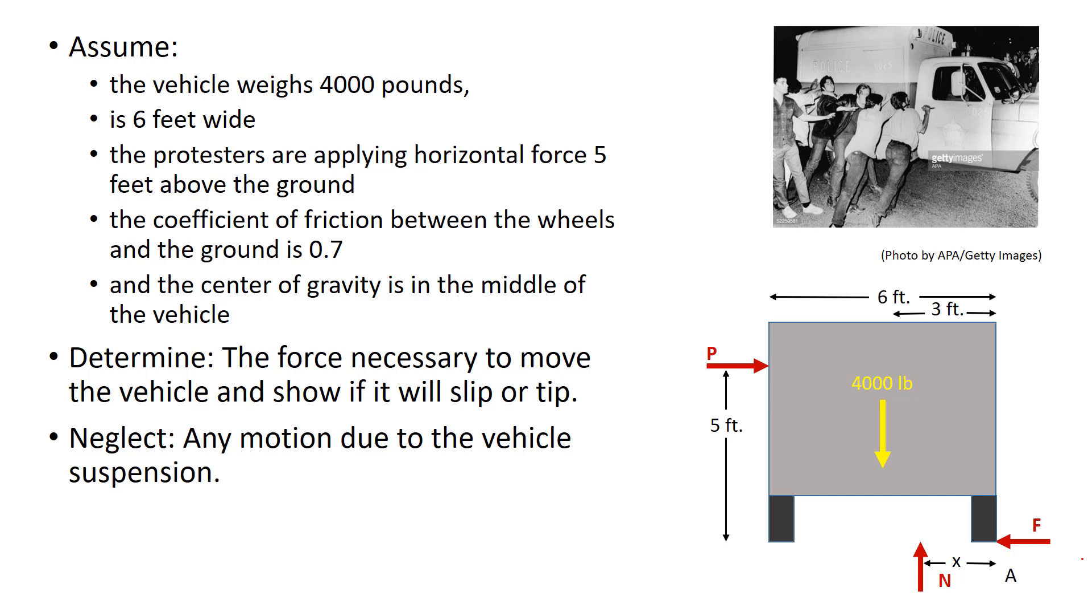So let us count how many unknowns we have here. We've got the applied force. We've got the normal force. We've got the friction force. And we, of course, have the location of the normal force, which varies in order to maintain a static equilibrium where the sum of the moments about that point A equals zero. And then we also have the question, will it slip or will it tip? So that really gives us five things we don't know. And we typically have three equations of equilibrium. We've dealt with four unknowns by adding the friction equation as appropriate, if it's an impending motion problem. But we got the slip or tip. How do we handle that?